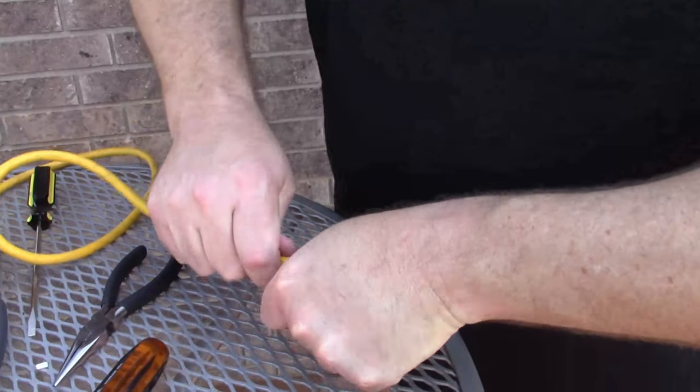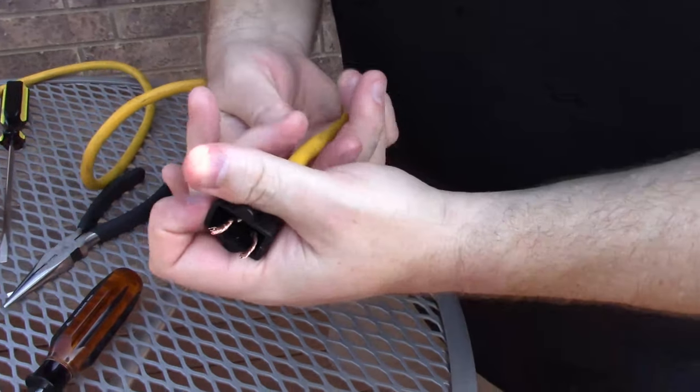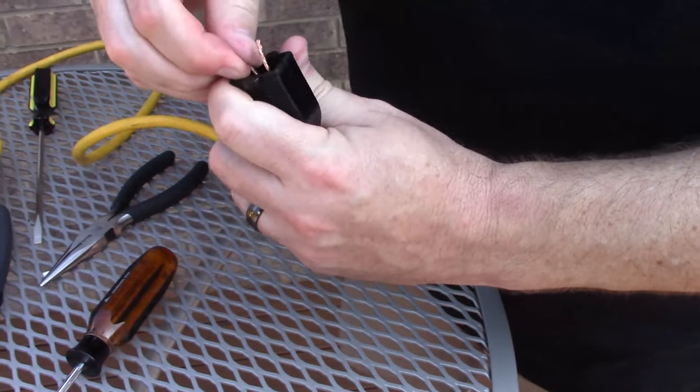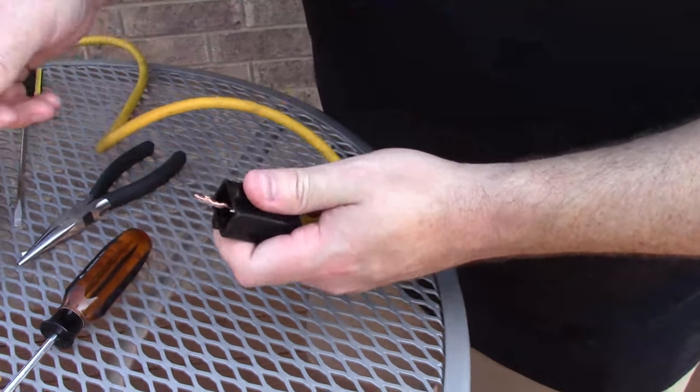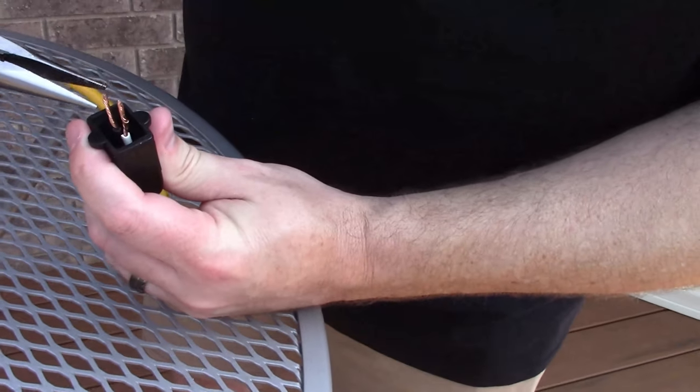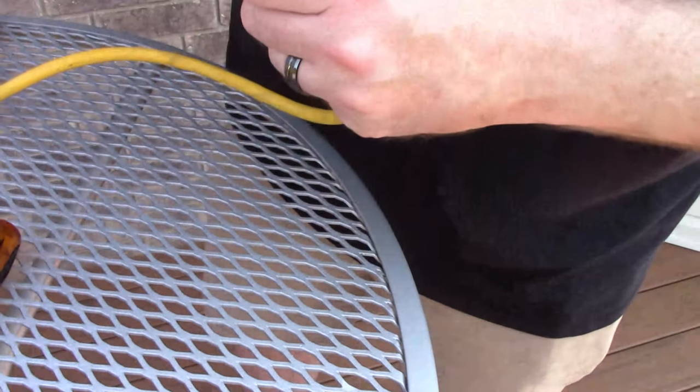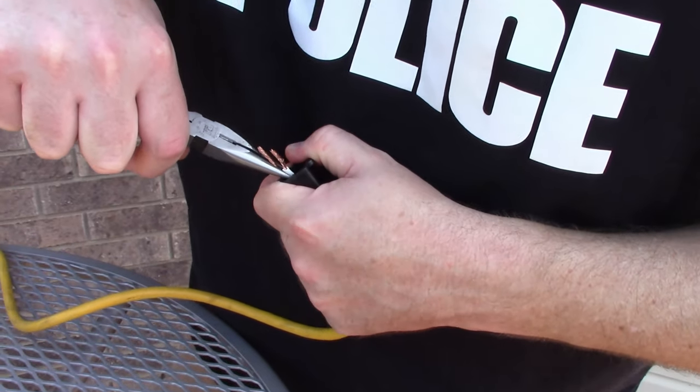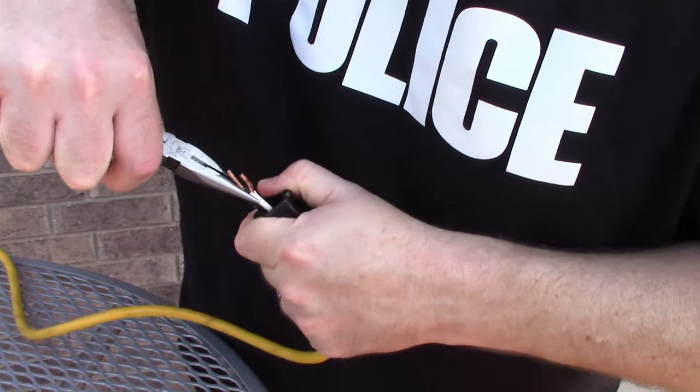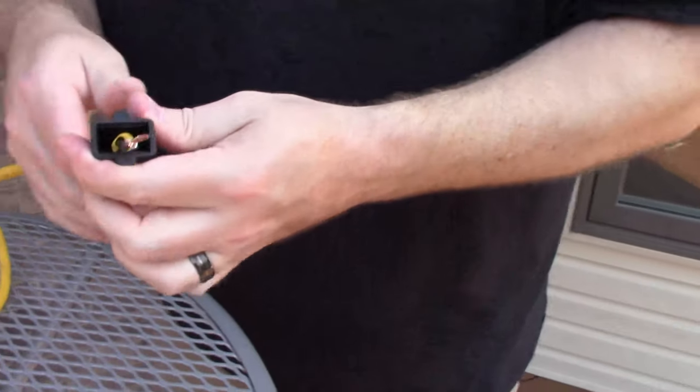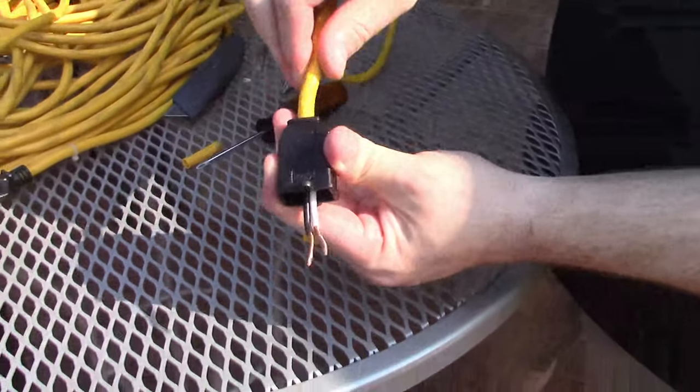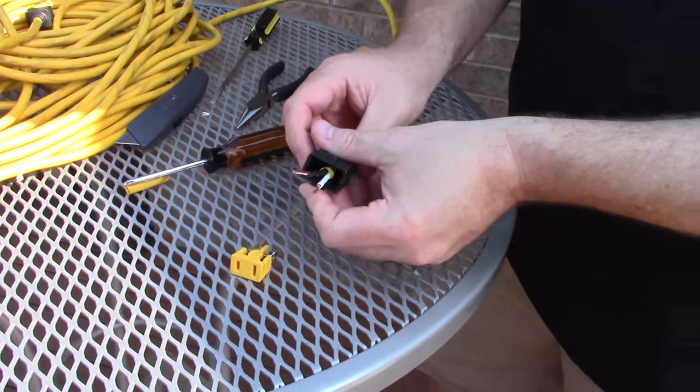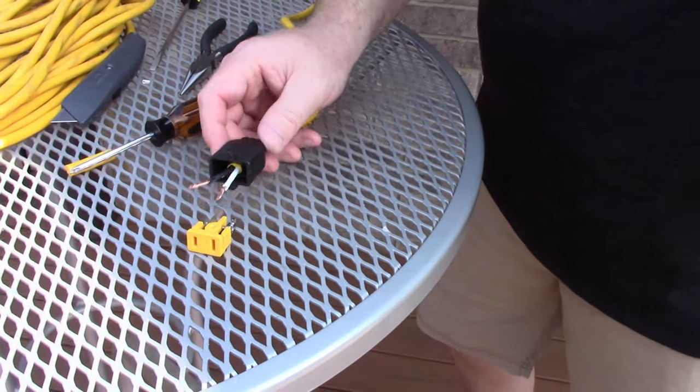We're going to push it in through here a little bit more. Then I'm going to take my needle nose pliers and pull the wire through just a little bit more so I have a little bit more room to work. You can see that's in there really good now, and we have enough room to work whenever we're doing our conductors.